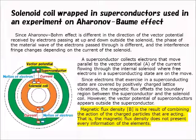Let us consider a solenoid coil wrapped in superconductors used for an experiment on the Aharonov-Bohm effect. Since the Aharonov-Bohm effect differs in the direction of the vector potential received by electrons passing above and below outside the solenoid, the phase of the matter wave of the electrons passed through is different, and the interference fringe changes depending on the current of the solenoid.